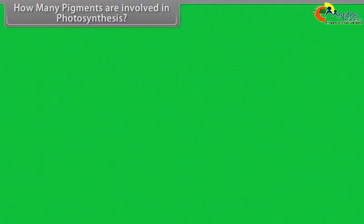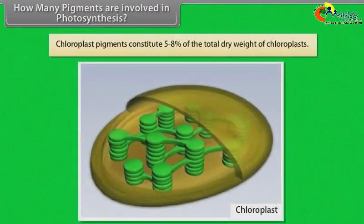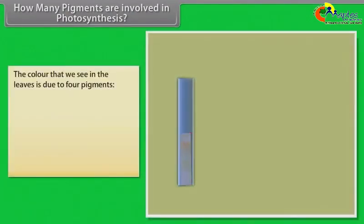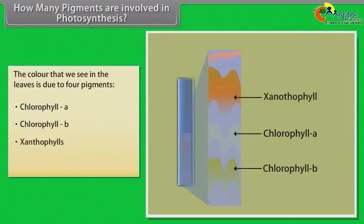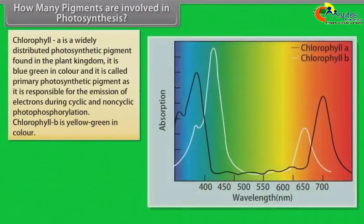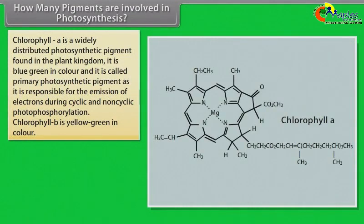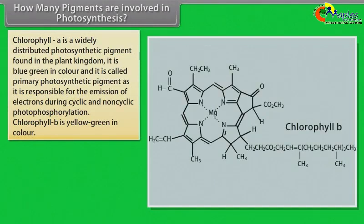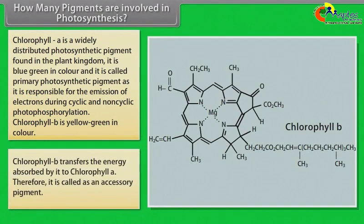Chloroplast pigments constitute 5-8% of total dry weight of chloroplasts. The color we see in leaves is due to four pigments: Chlorophyll A, Chlorophyll B, Xanthophylls, and Carotenoids. Chlorophyll A is widely distributed in the plant kingdom, blue-green in color, and is called the primary photosynthetic pigment as it is responsible for electron emission during cyclic and non-cyclic photophosphorylation. Chlorophyll B is yellow-green in color and transfers absorbed energy to Chlorophyll A. Therefore, it is called an accessory pigment.